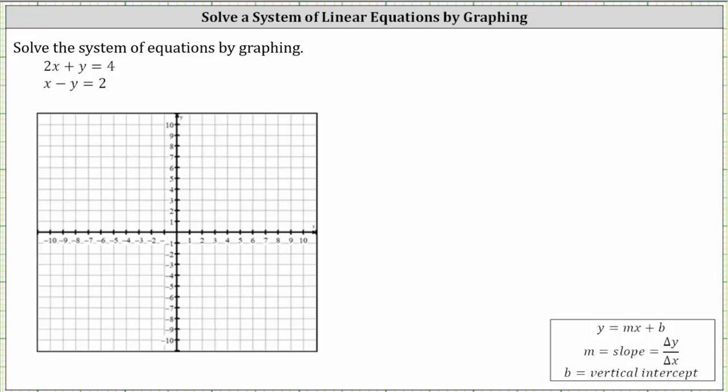We're asked to solve the system of equations by graphing. When we graph two lines on the coordinate plane, three things can happen. Number one, there could be one point of intersection and therefore there's one solution.